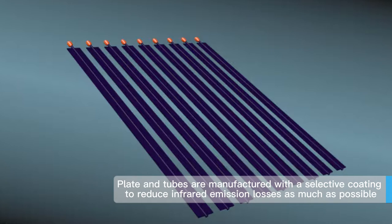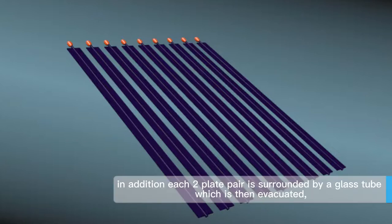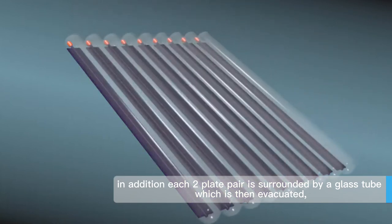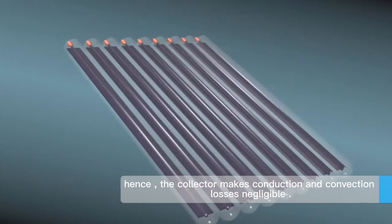Plate and tubes are manufactured with a selective coating to reduce infrared emission losses as much as possible. In addition, each plate pair is surrounded by a glass tube which is then evacuated. Hence, the collector makes conduction and convection losses negligible.